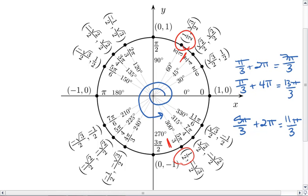Or, we could make 2 full laps. 1, 2, and then hit 5 pi-thirds. In which case, it's 5 pi-thirds plus 4 pi, which is going to equal 17 pi-thirds.